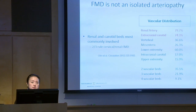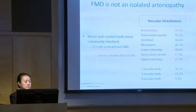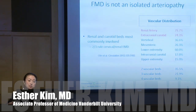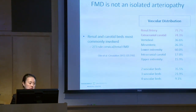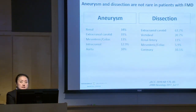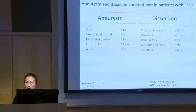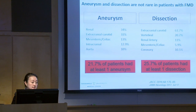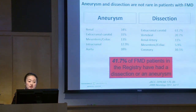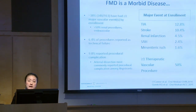Patients can present with heart attack but also with stroke. Just like SCAD, FMD is not an isolated arteriopathy. If you've got FMD in one place, such as the kidney artery, two-thirds of patients will also have FMD in their carotids. FMD can affect any medium-sized vascular bed. In the FMD registry, one in five patients has at least one aneurysm, one in four has had at least one dissection, and four in ten have had either one or the other.